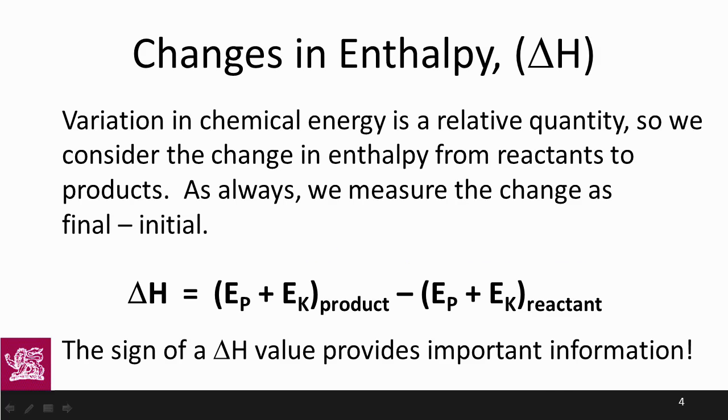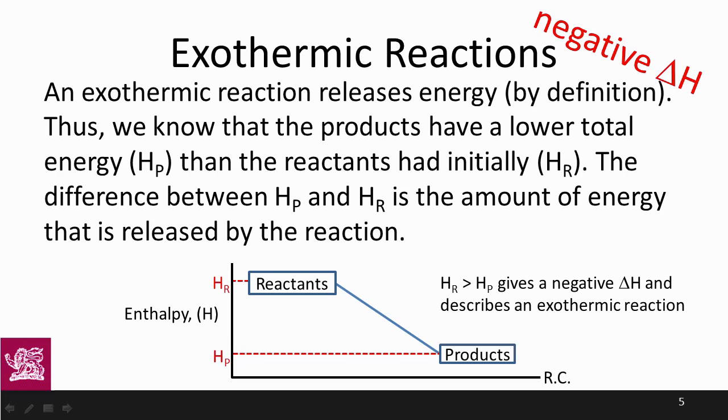Let's explain that in a little more detail. We have an exothermic reaction, which means we have a negative delta H value. Exothermic reactions release energy by definition, and so we know that the products must have a lower total energy than the reactants had initially. The difference between the enthalpy of the products and the enthalpy of the reactants is the amount of energy that is released by the reaction.